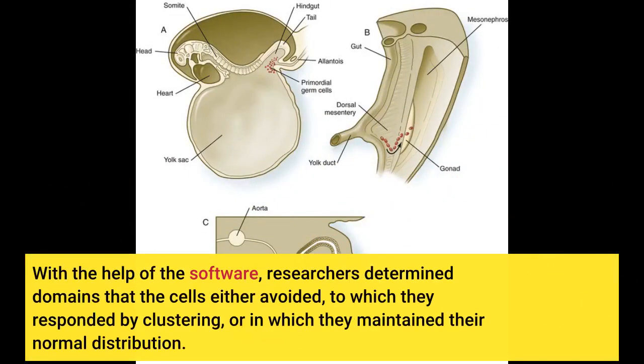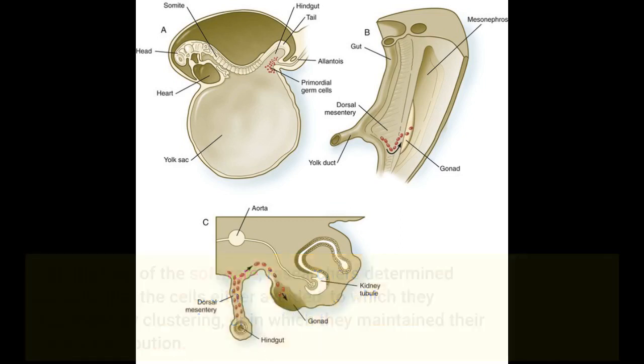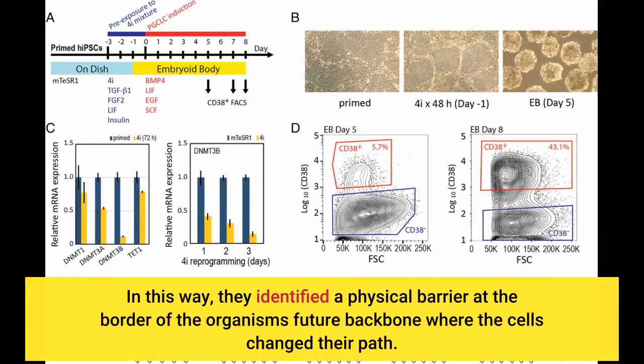With the help of the software, researchers determined domains that the cells either avoided, to which they responded by clustering, or in which they maintained their normal distribution. In this way, they identified a physical barrier at the border of the organism's future backbone where the cells changed their path.